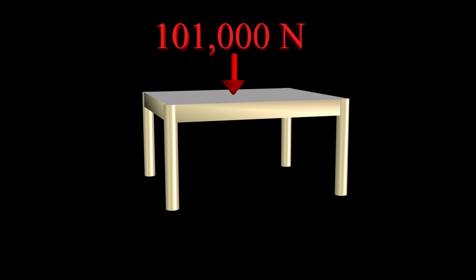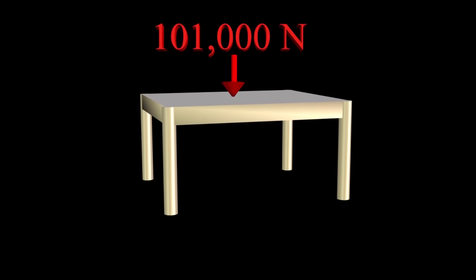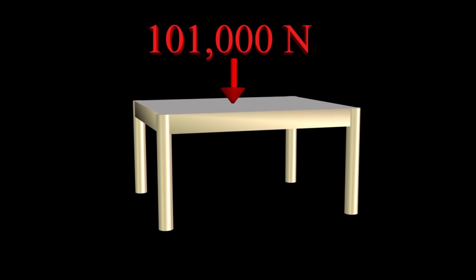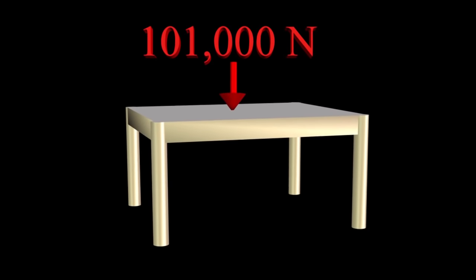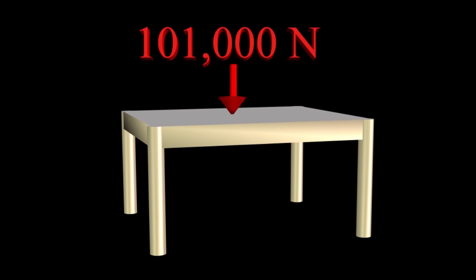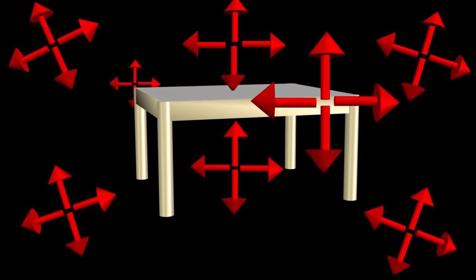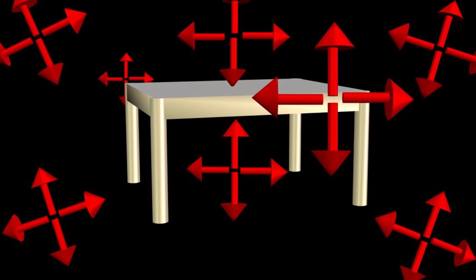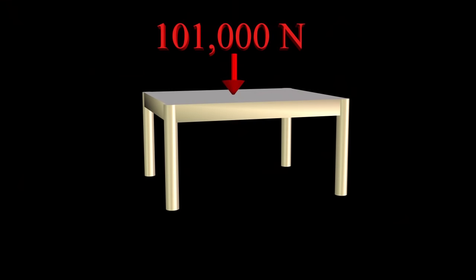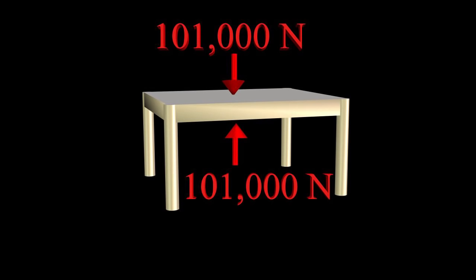If air pressure can generate such huge forces, why don't we notice it? Why doesn't the table collapse? It turns out that pressure in a fluid like air transmits in all directions, not just down. This means that the 101,000 newtons of force pushing down on the table top is balanced by 101,000 newtons pushing up. Forces are balanced.